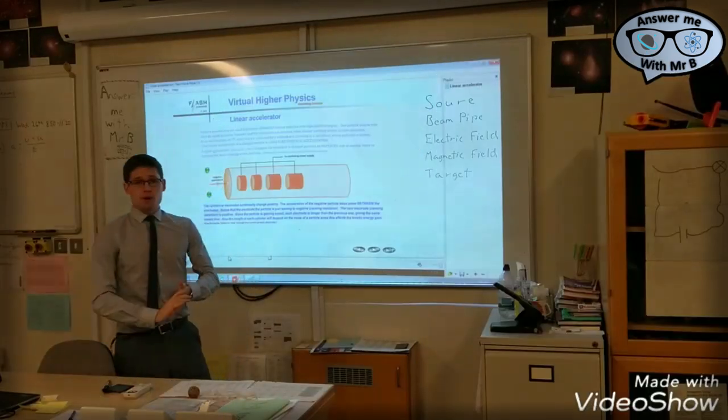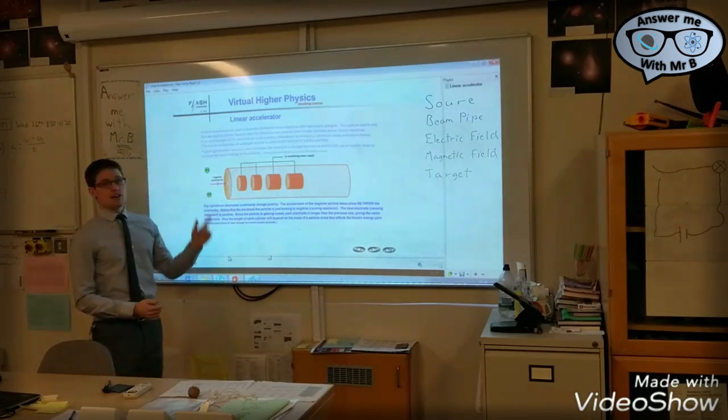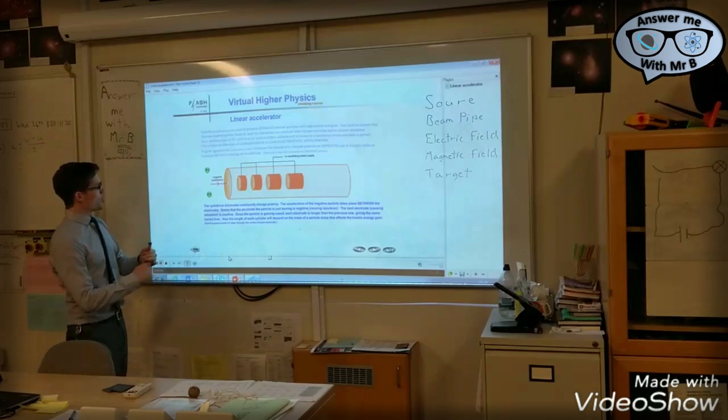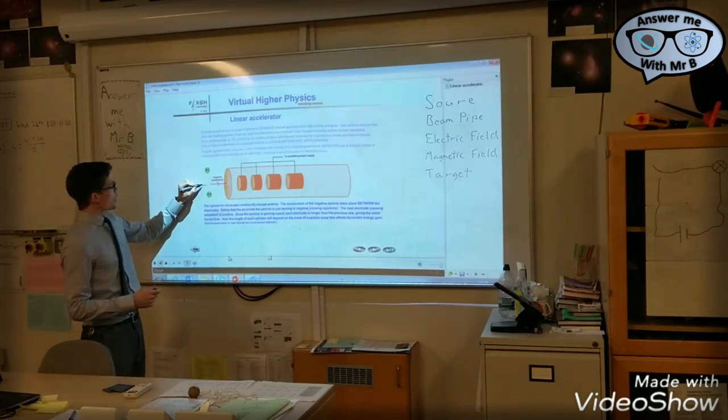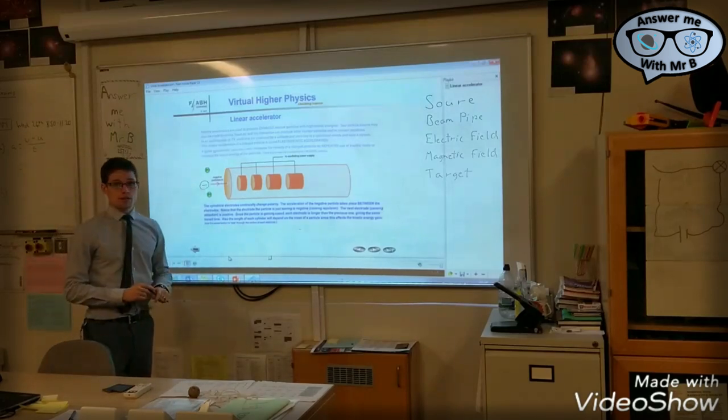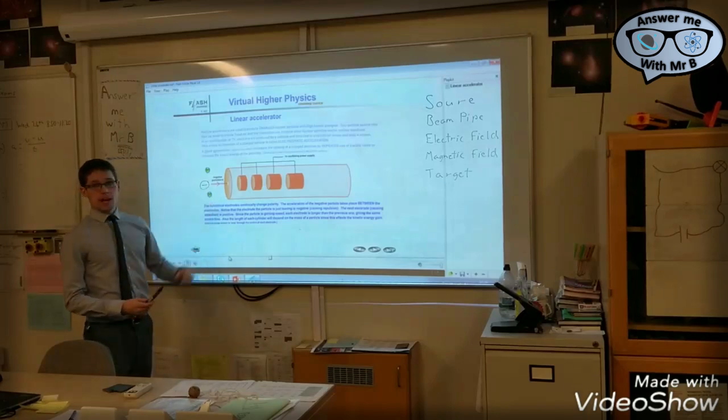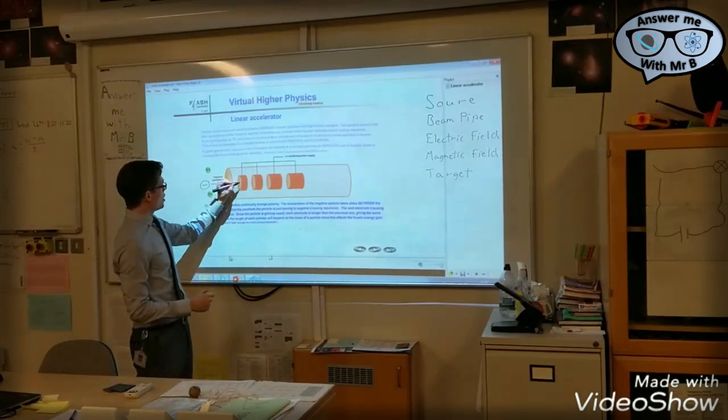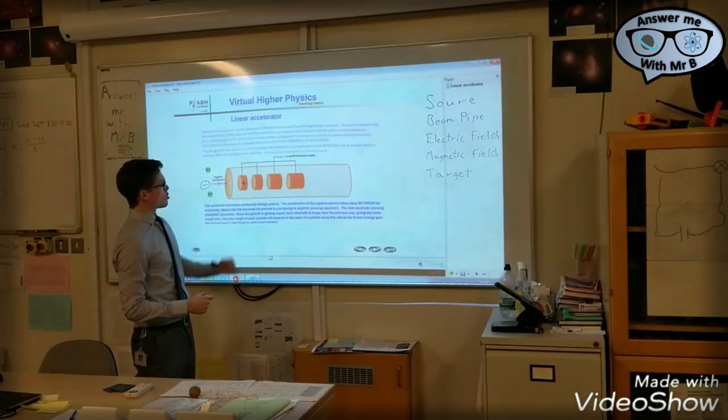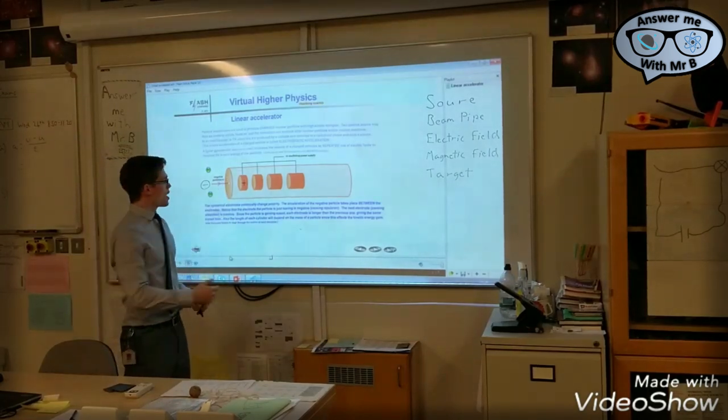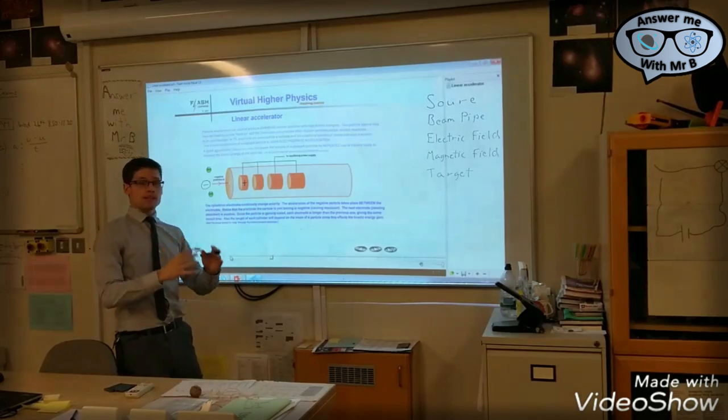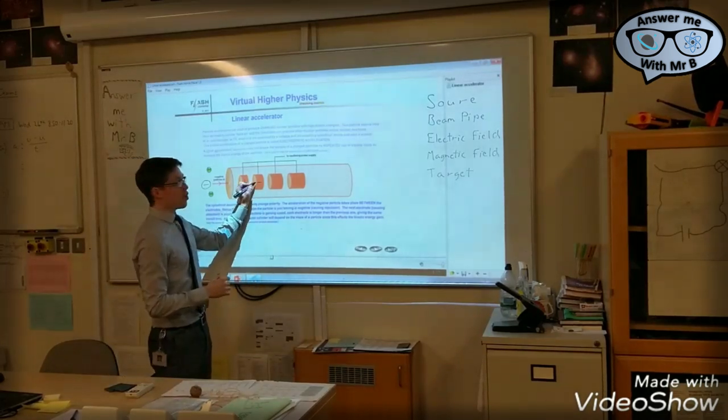Now, the first type of particle accelerator is called a linear accelerator. And this is how it works. So, in this case we're going to start off with a negatively charged particle, and that's going to enter the beam pipe. This section here starts off positively charged. And the positive and negatively charged sections alternate as you go down the tube.